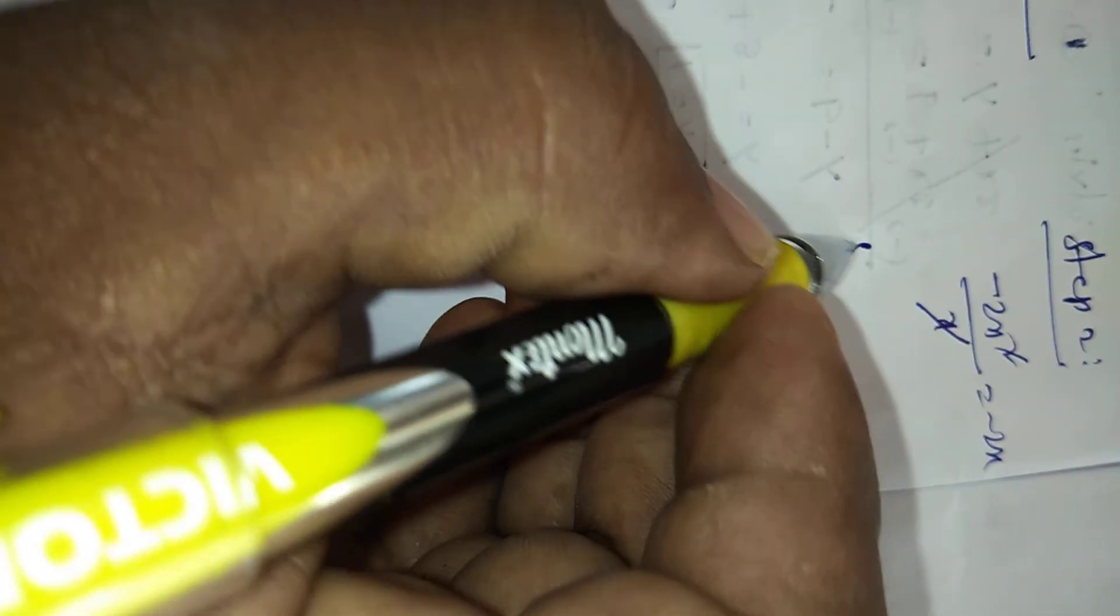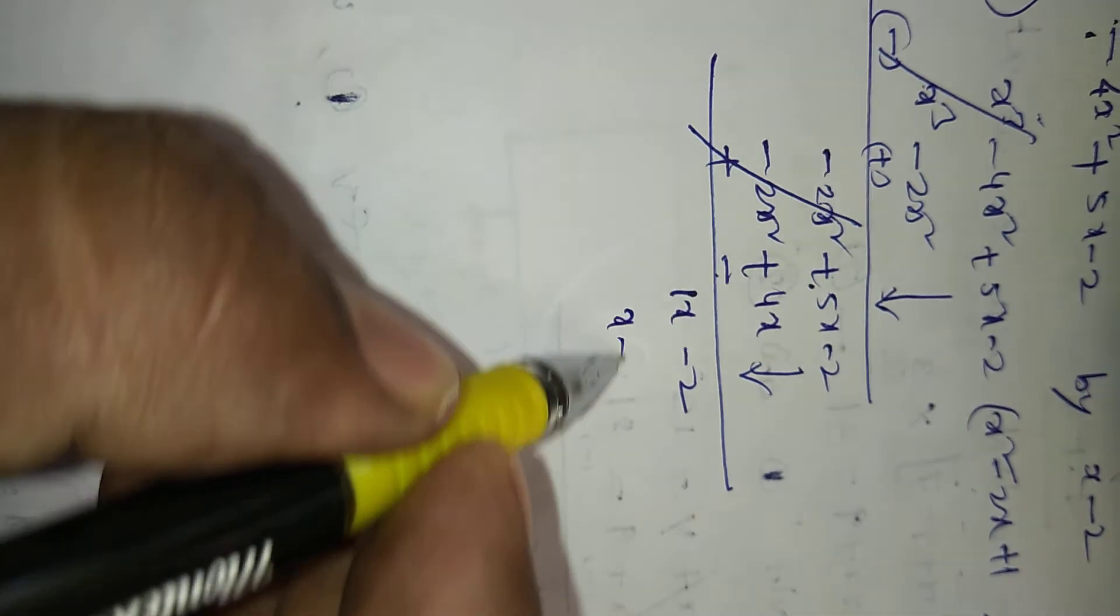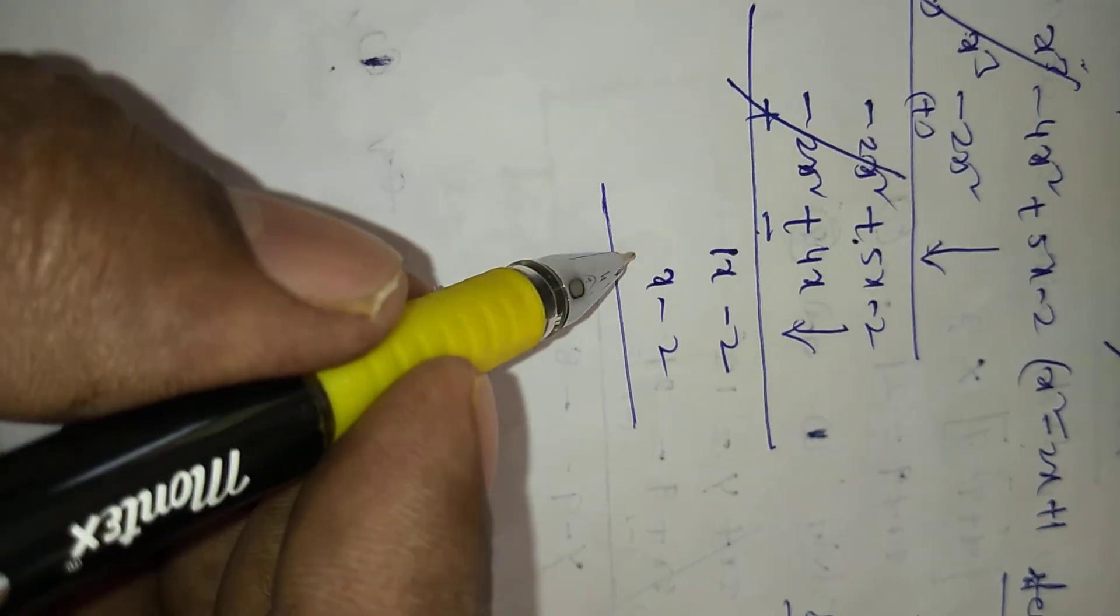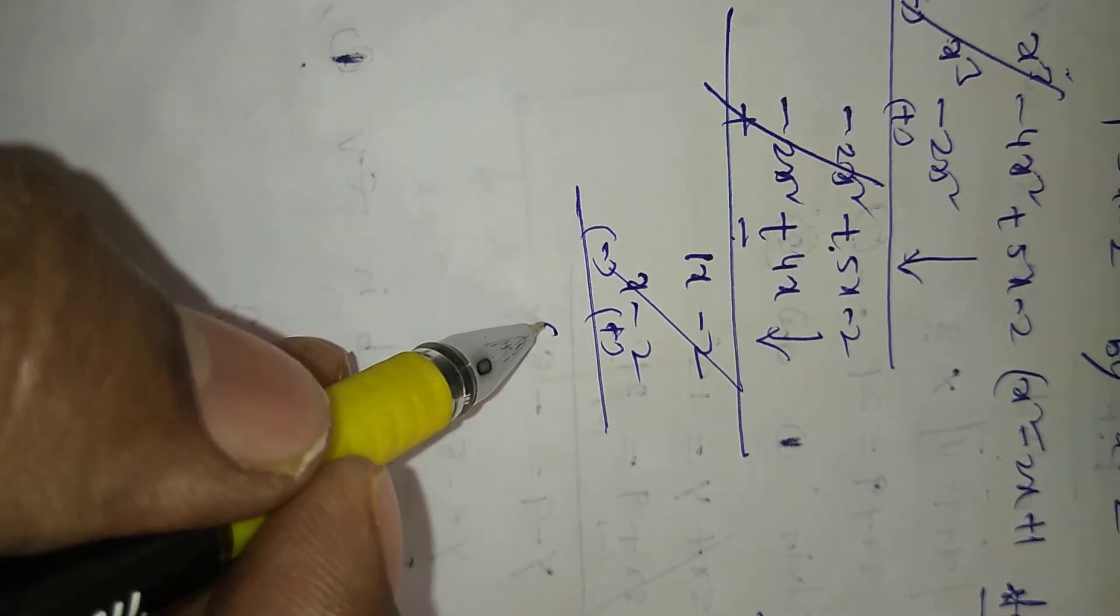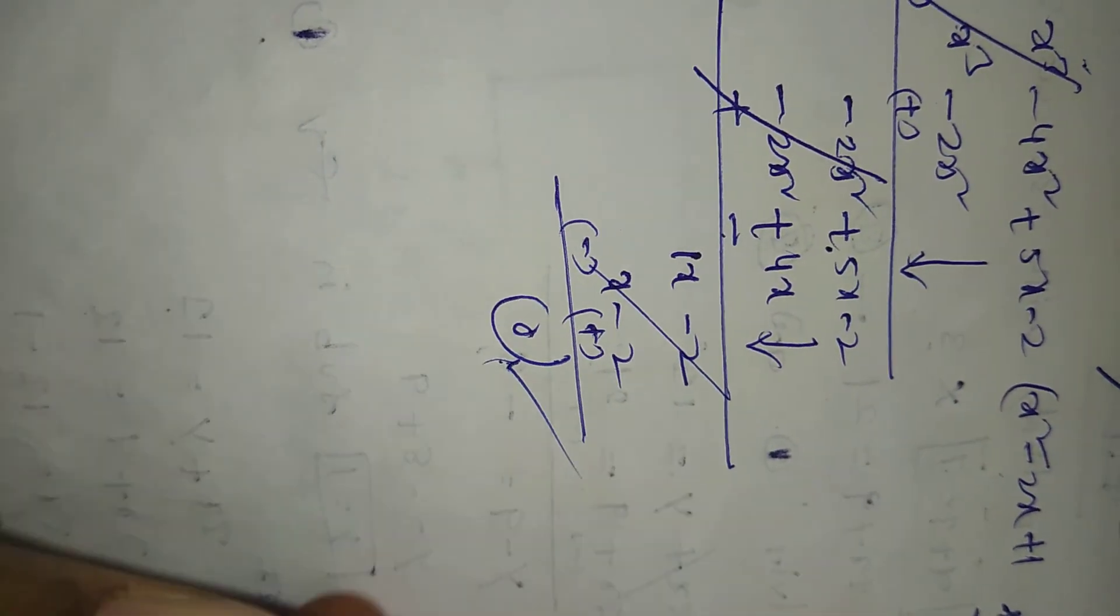Step number 3. x is first term, x is second first term in dividend. Divisor is x, x one time. We got plus 1. We have to write here clearly. And x minus 2 into 1, x minus 2 we got. Plus becomes minus, minus becomes plus. Both are cancelled. We got the remainder is 0.